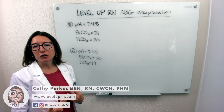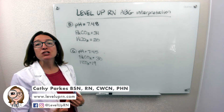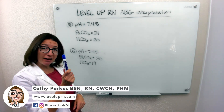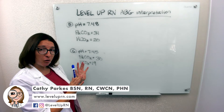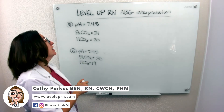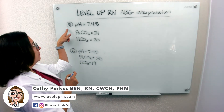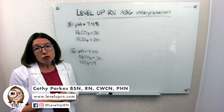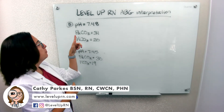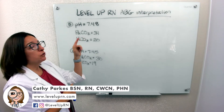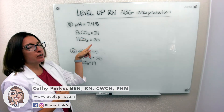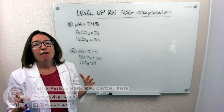We're going to work through some more ABG problems. I have a new pen, so hopefully that will work better. Number five: we have a pH of 7.48, PaCO2 of 31, and HCO3 of 20.